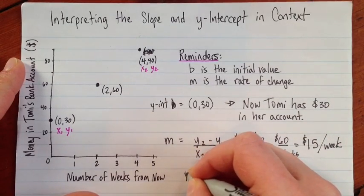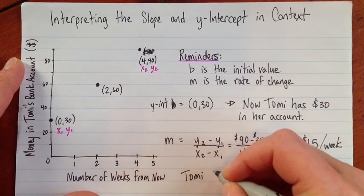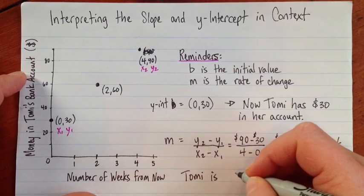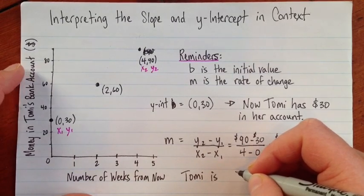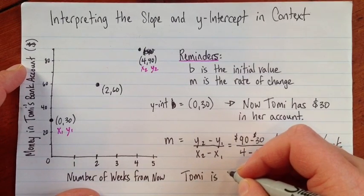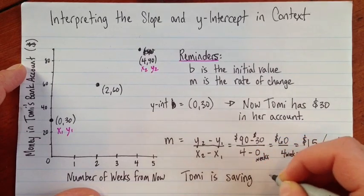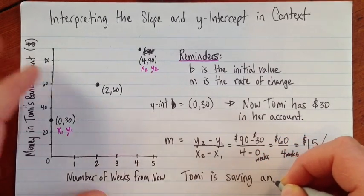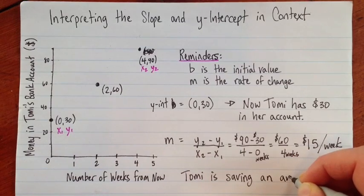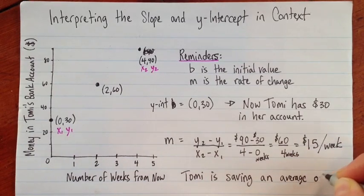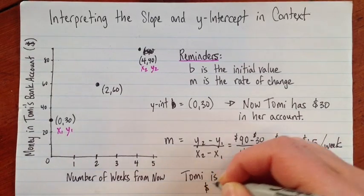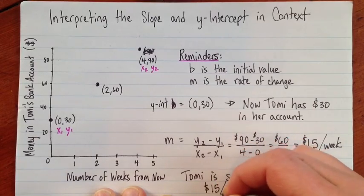So this tells us Tommy is making or saving? I guess we don't know. Let's just guess savings. We'll guess it's a savings account. Saving an average of 15 dollars per week.